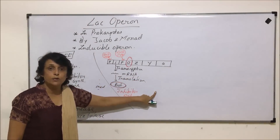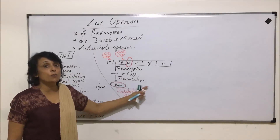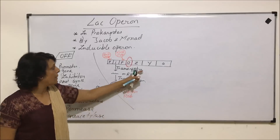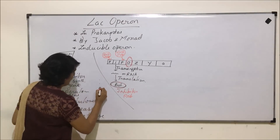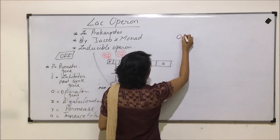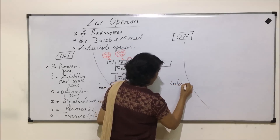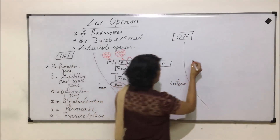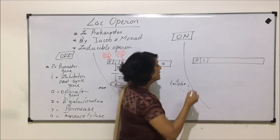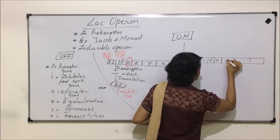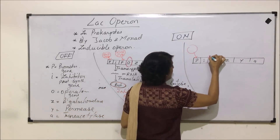Now let us take the second situation. As soon as lactose is available, the lactose needs to be broken down into glucose and galactose, which will be required by the bacteria for its growth and development. We will draw another diagram so we can compare the off and on mode. In the on mode, the operon has: a promoter gene followed by inhibitor gene, another promoter, operator, and three structural genes Z, Y, and A. There is an RNA polymerase at the promoter.